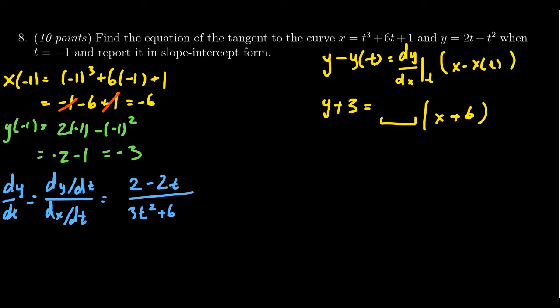But admittedly, like we said, we only need to evaluate this when t equals negative 1. That's really what we care about. So instead of simplifying the derivative, I'm just going to plug in negative 1 at this moment. So we get 2 minus 2 times negative 1 on top, and on the bottom, we get 3 times negative 1 squared plus 6.